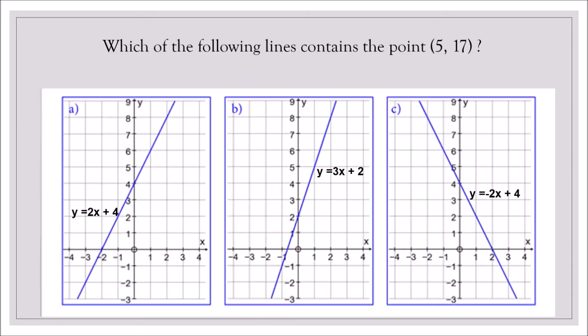Which of the following lines contain the point 5, 17? Let us look at our choices. Definitely, it's not C, because the line is decreasing. And at x equals 5, y coordinate is already negative, because the line is below the x axis. And if you see in our given point, the y coordinate should be positive 17. So cross out choice C.